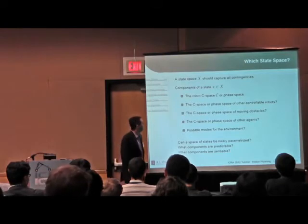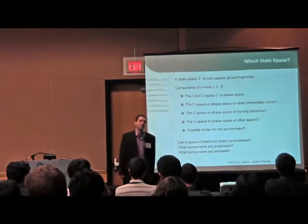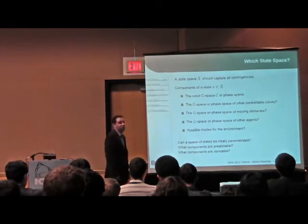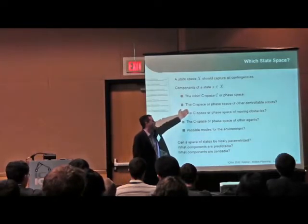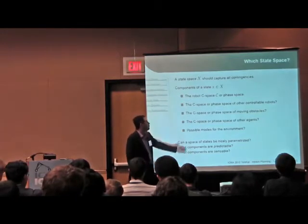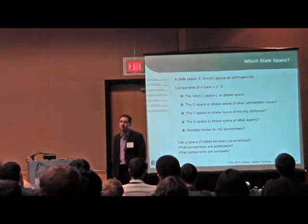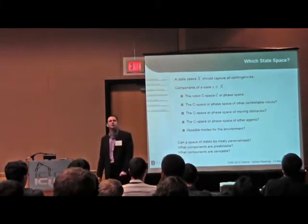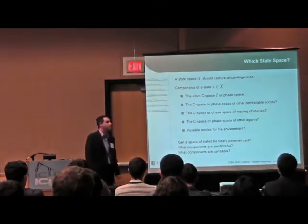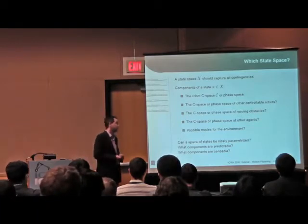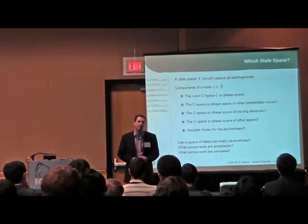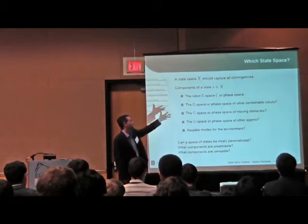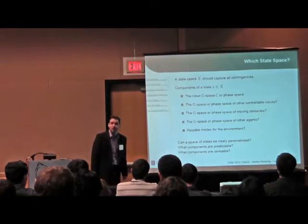The robot you're trying to control has its own C-space or phase space. Other robots, moving obstacles, and other agents all have their own configuration spaces or phase spaces, which become components of the overall state. There may also be discrete modes for the environment, making it a kind of hybrid system. When formulating the state space, we'd like to parameterize it as nicely as we parameterized the space of robot transformations this morning.